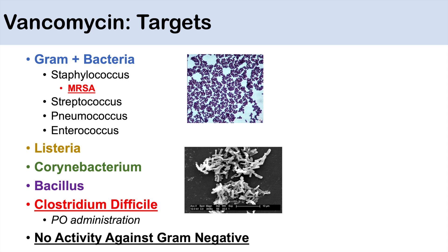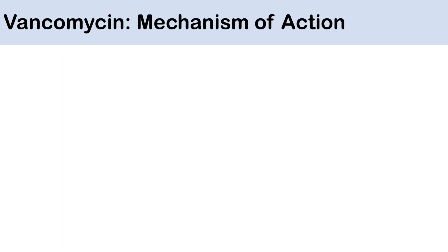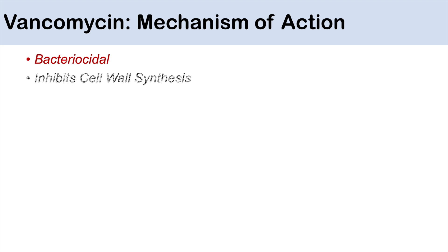I want to clarify that vancomycin has no activity against gram-negative bacteria. So what is the mechanism of action of vancomycin? Vancomycin is bactericidal because it inhibits cell wall synthesis.